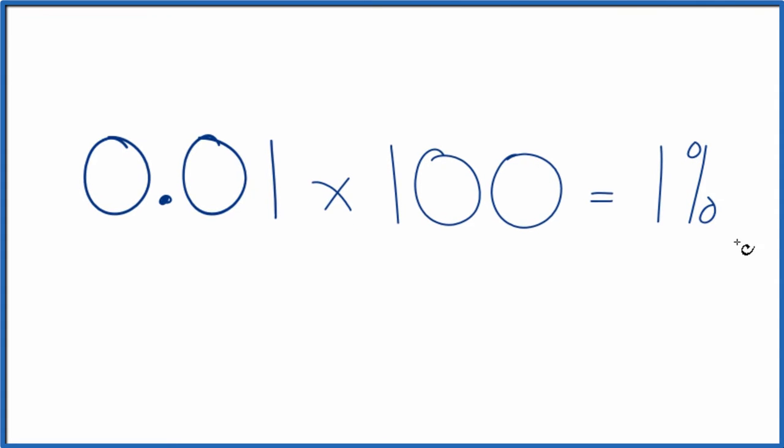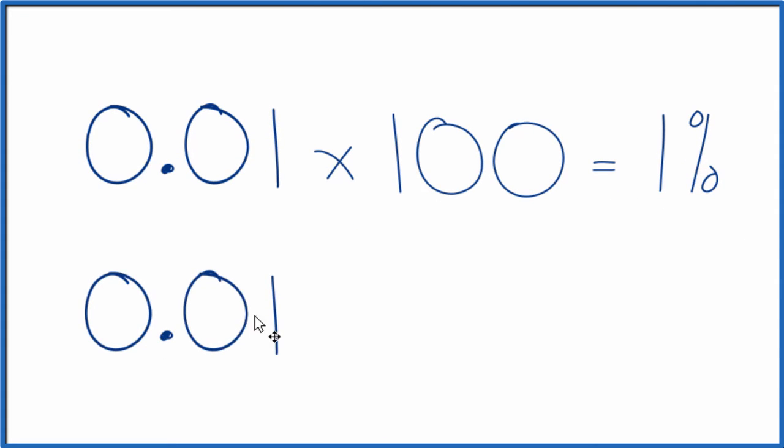The next way, we can take 0.01, and we can move the decimal place here one, two places to the right. So we go one, two places to the right. We have 0.01 point. We don't need the zeros, and we don't need the point, and we end up with 1%, which is what we found before.